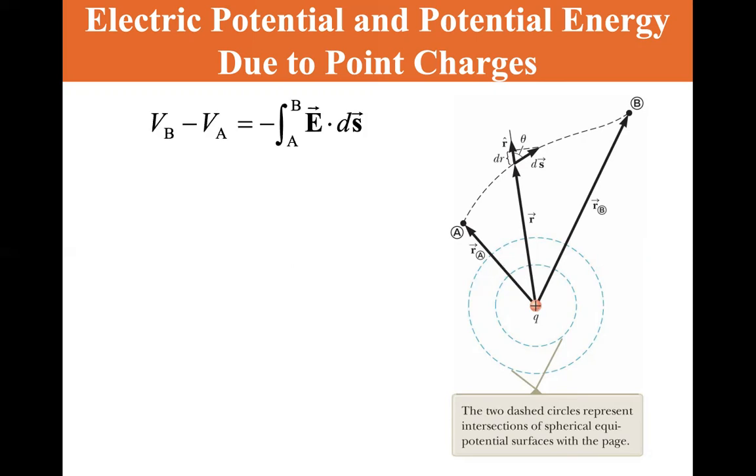So VB minus VA is equal to minus integral from A to B of E dot dS. And E is equal to kₑ Q over r squared in the r direction. So E dot dS is equal to kₑ Q over r squared r dot dS.